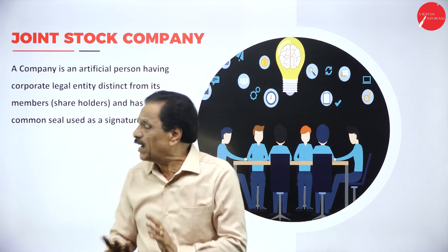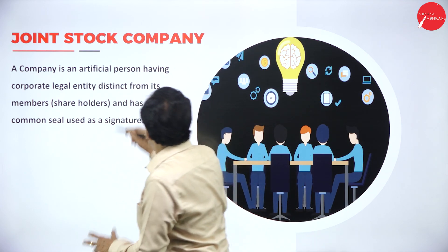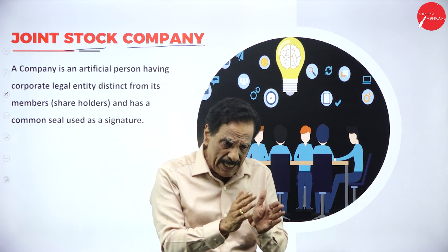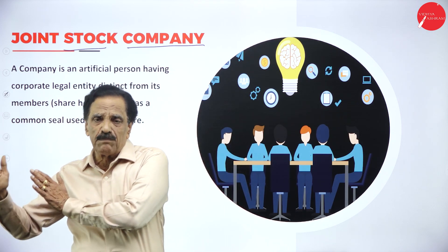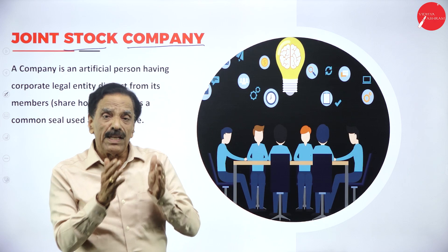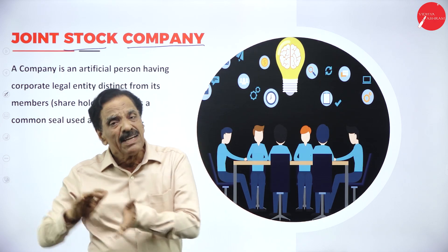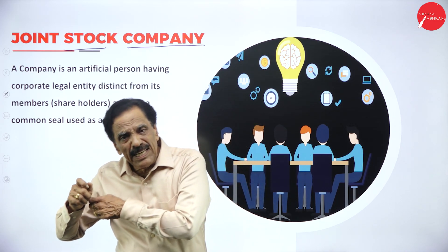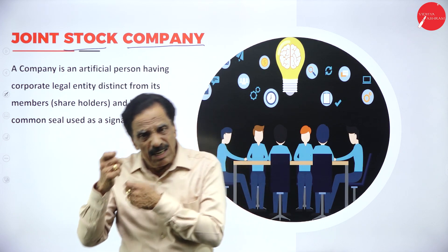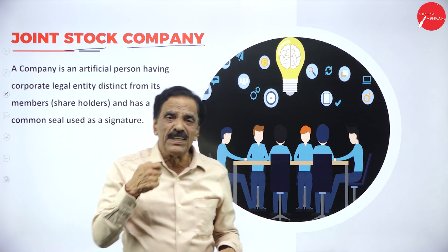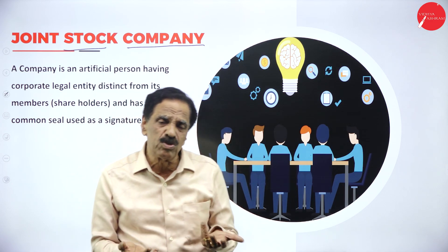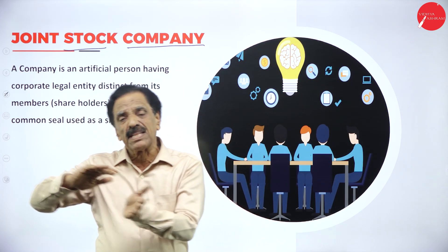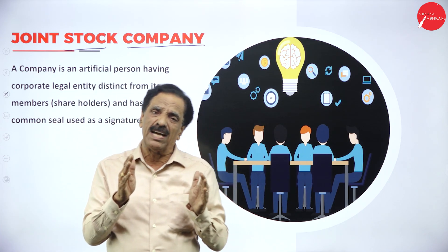Before going to the company, we need to understand the different forms of business. First, we have the sole trader — a single person who maintains his business. Whatever profit comes, it goes to him. But if he dies suddenly, the shop will be closed; there is no continuity in business.